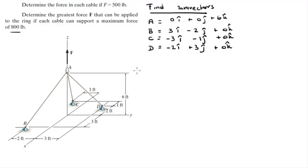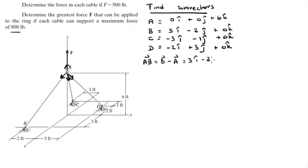Now that we have all the points, we can find all the unit vectors. I'll show you how to do one and you do the rest. To find the unit vector from A to B, first find the vector B minus A, which comes out to be (3i − 2j − 6k). Then find the magnitude: 3 squared plus 2 squared plus 6 squared equals 49, and the square root of that is 7.